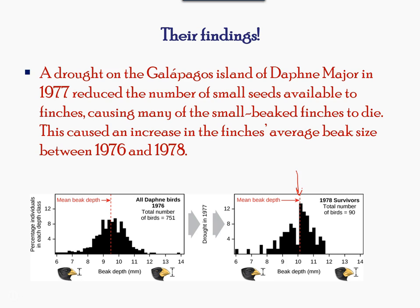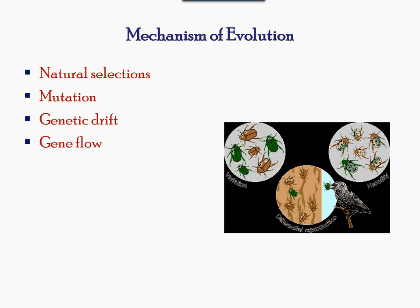The mechanism of evolution can be understood by these four processes: natural selection, mutation, genetic drift, and gene flow. In the coming slides, we will explore each of these concepts.